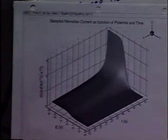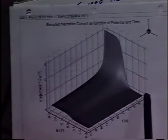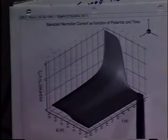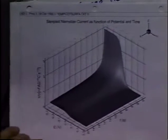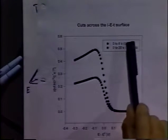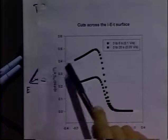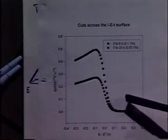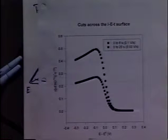If we cut along the time dimension, we see our I-T curves with exponential or T to the minus one-half decay, until we reach potentials where there's no reaction and the decay disappears. Looking at cuts from 0 to 6 seconds versus 0 to 20 seconds in the diagonal direction, we see shapes with a peak and a decay characteristic for those cuts. These are not exactly the same shapes we'd get with potential sweeps, but they capture the essence of what we'll see.